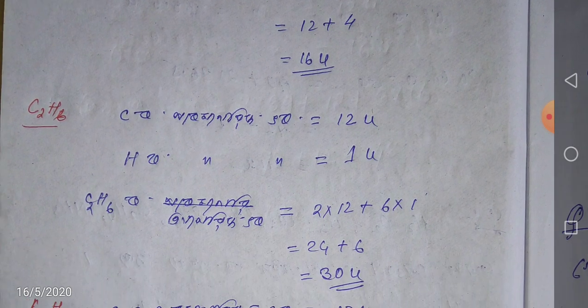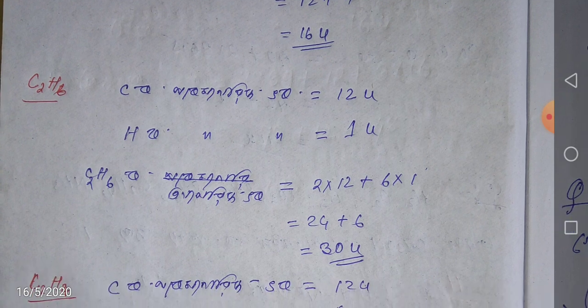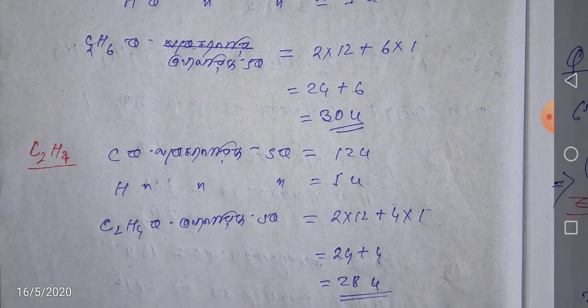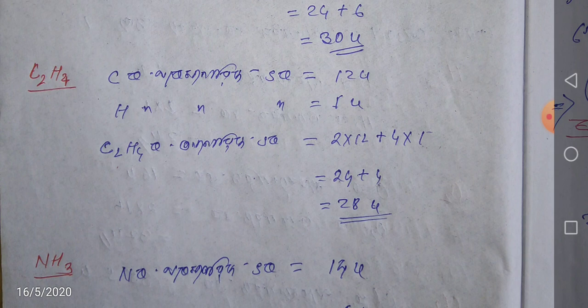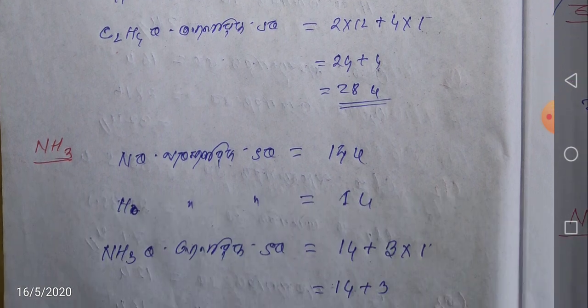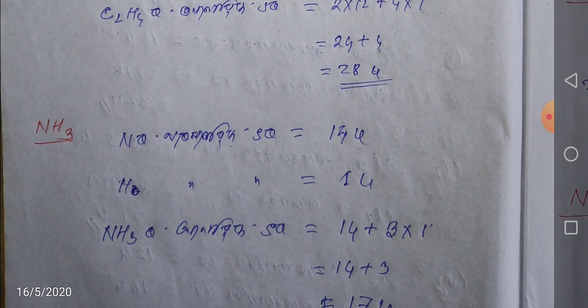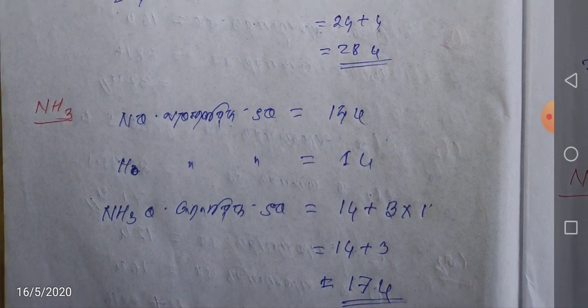C2H6 is carbon: 2 into 12 plus 6 into 1. C2H4 is carbon: 2 into 12 plus 4 into 1, equal to 28 U. NH3 is ammonia — nitrogen is 14, plus 3 into 1, equal to 17 U.